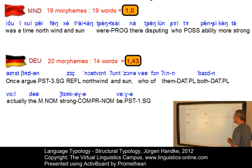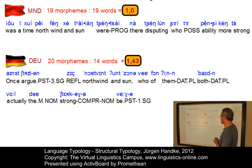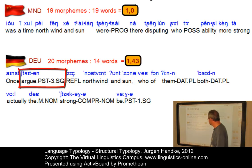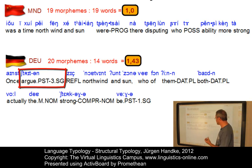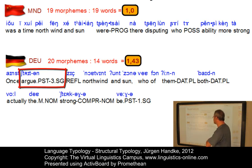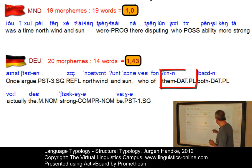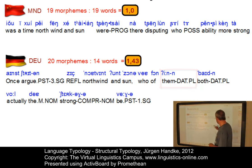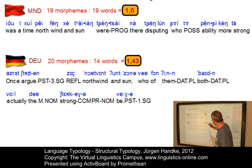In German, we can clearly count 14 words but 20 morphemes. For example, 'stritten' has two morphemes: 'stritt' is the stem (involving a vocalic change of 'streiten'), and '-en' is the affix which fuses third person and plural into its structure. Or look at '-enen': 'them' plus dative plural in the affix. So clearly, German is far more synthetic, and the higher this value, the more synthetic a language is.